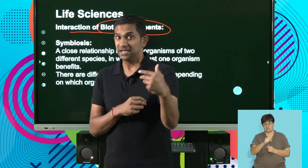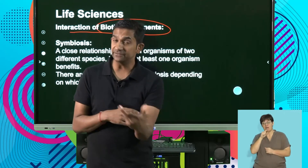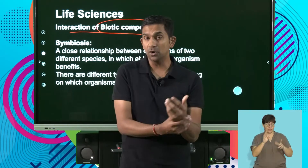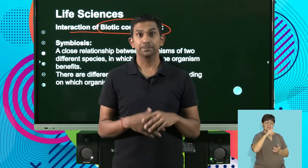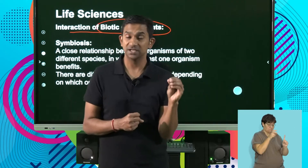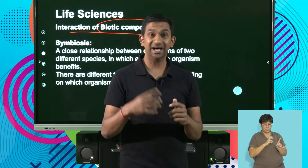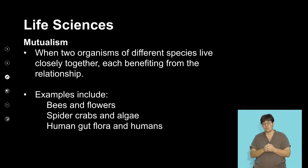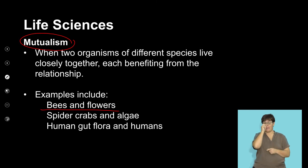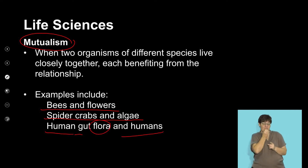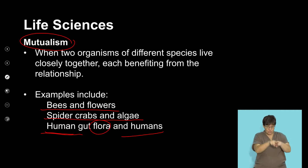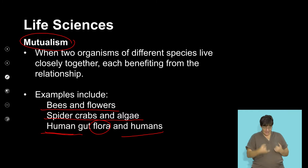Biotic components often live and interact with each other, and there are different levels of symbiosis. One is parasitism — parasites living on a host where the host is affected and the parasite benefits. The other relationship is called mutualism, where bees and flowers coexist, the spider crab and algae, and good bacteria in our digestive systems ensure that we survive.